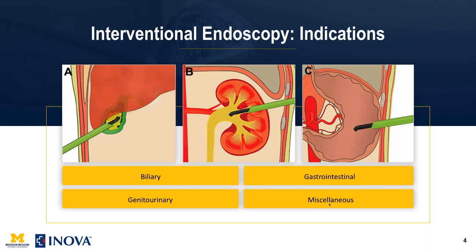We're interested in genitourinary endoscopy — for instance, removing foreign bodies, removing kidney stones, or using endoscopy to help place nephrostomy tubes or nephro-ureteral stents. We're also interested in endoscopy of the gastrointestinal tract in patients with altered anatomy or where GI typically fails, including transgastric endoscopy, duodenoscopy, rectal endoscopy, colonic endoscopy, and other miscellaneous uses such as laser fistula ablation with endoscopic monitoring.